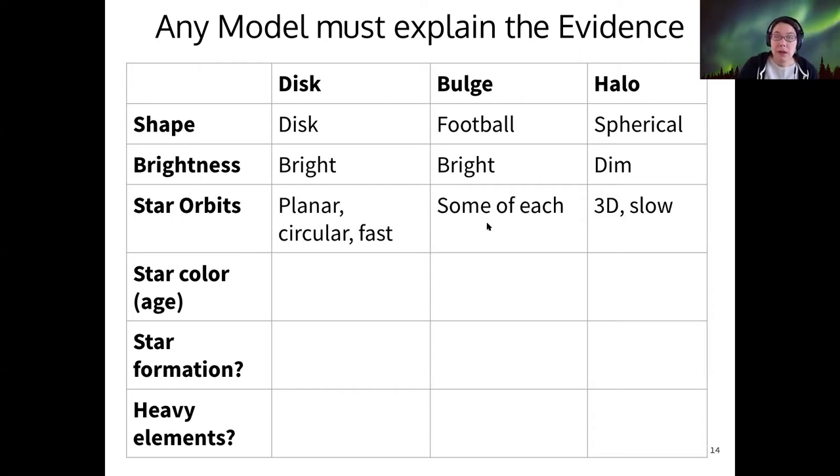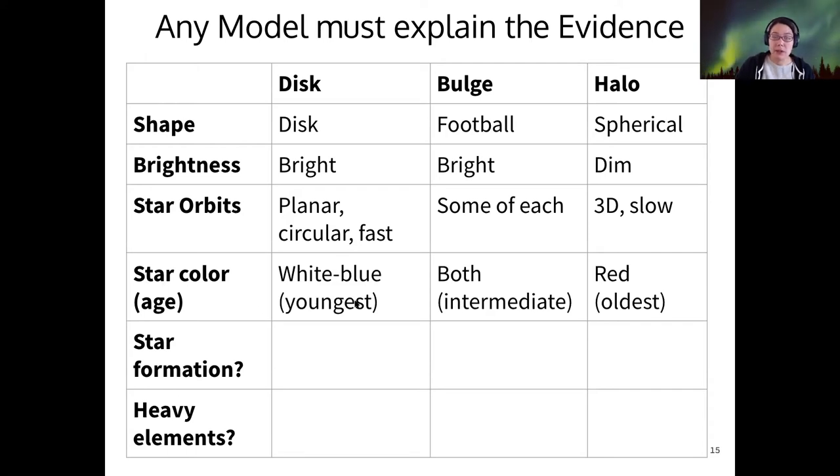The star orbits we just talked about. When we add our bulge into this discussion, I would note that it has some of each type of stellar orbit. So you can think of the bulge as having kind of intermediate properties between the disk and halo for the most part. Star color, so that indicates star age, is also quite different. So we talked about white and blue stars in the disk being the youngest, red stars in the halo being the oldest, and the bulge has some of each. So it's got intermediate mixes of stellar ages. There is some active star formation in the bulge, but not as much as in the rest of the disk. So that's just what I'm saying here. No stellar formation in the halo, lots in the disk, and some in the bulge, but not as much.